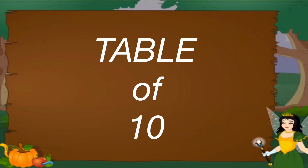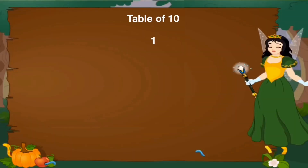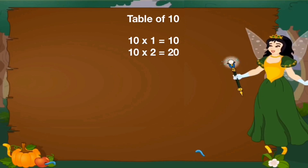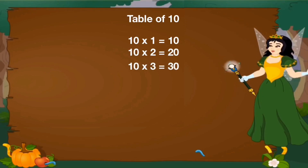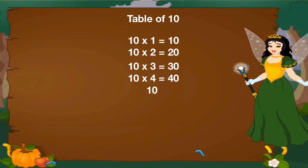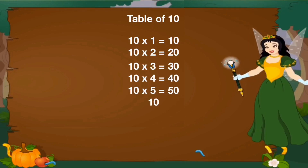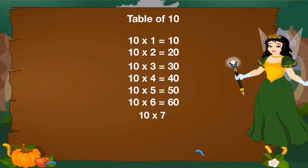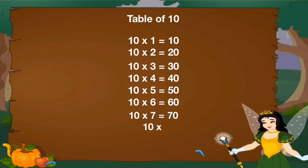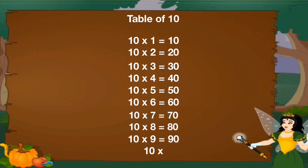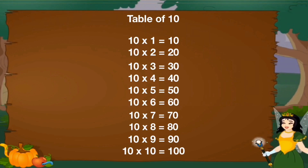Let's revise table of 10. 10 1's are 10, 10 2's are 20, 10 3's are 30, 10 4's are 40, 10 5's are 50, 10 6's are 60, 10 7's are 70, 10 8's are 80, 10 9's are 90, 10 10's are 100.